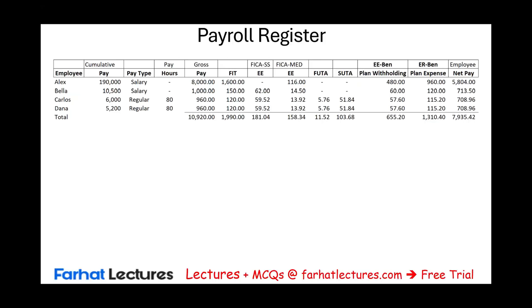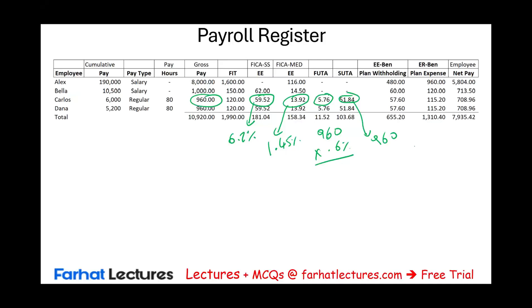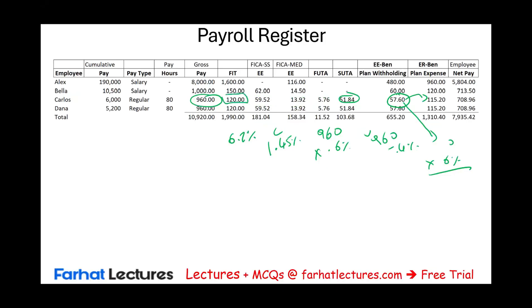This should be the answer. How do we arrive at these numbers? Gross pay times 6.2% gives Social Security. Gross pay times 1.45% gives Medicare. For Carlos, FUTA is $960 times 0.6% = $5.76, and SUTA is $960 times 5.4% = $51.84. The employee benefit withholding is gross pay times 6%, and the employer doubles it — so employer benefit is $57.60 times 2 = $115.20. Net pay equals gross pay minus federal income tax minus employee Social Security minus employee Medicare minus employee benefit withholding.